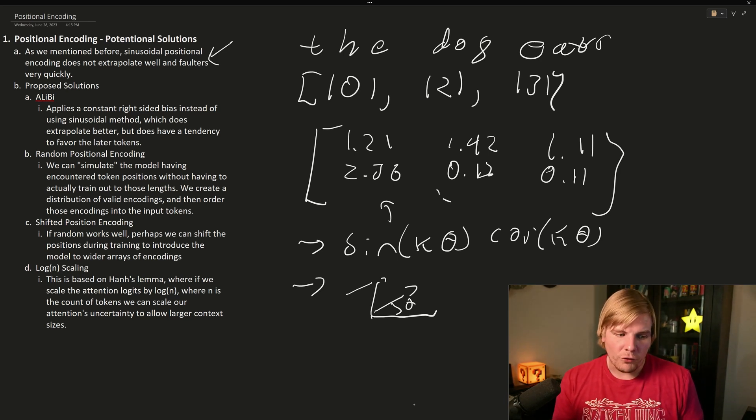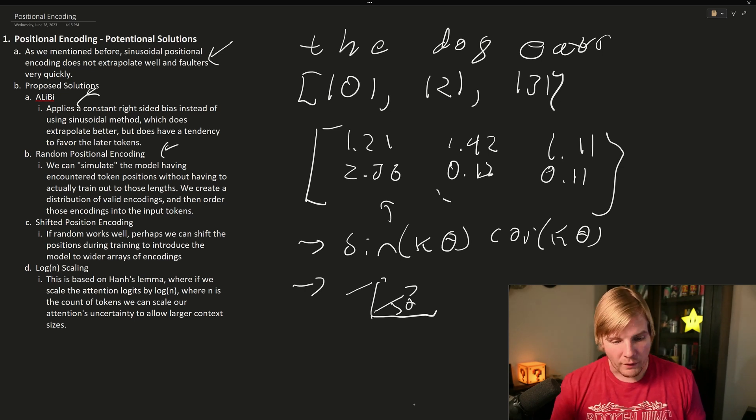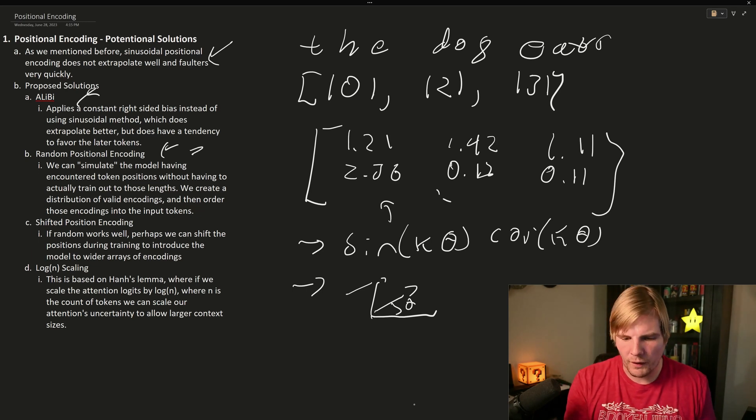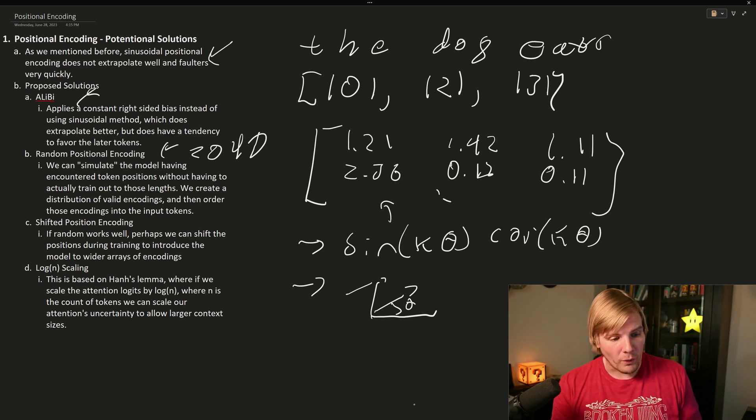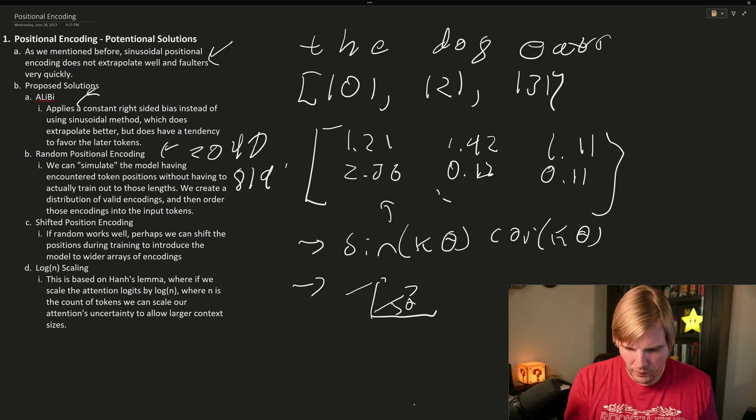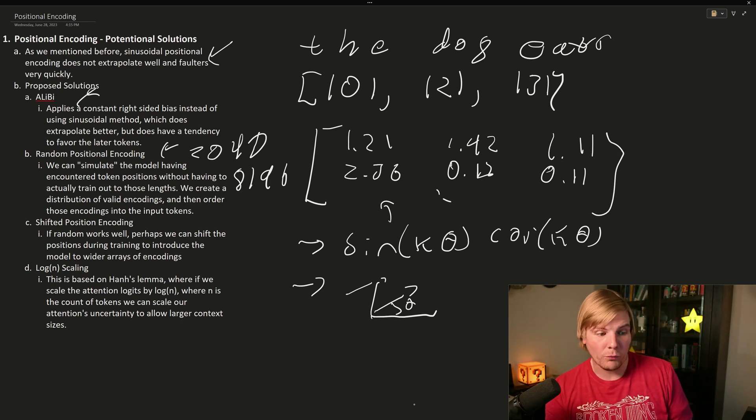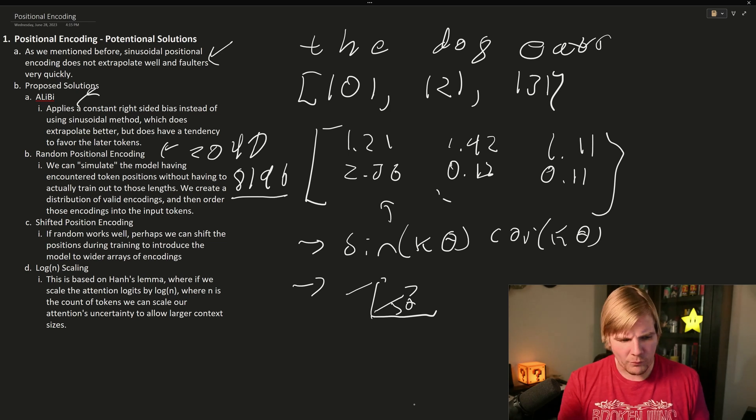But our solutions for this up until now have been alibi, which is the linear bias. But this has a big weakness in that earlier tokens lose some of their context or importance as compared to the later tokens. Then we tried random positional encoding. So what happens if I'm still only going to train 2048 tokens, but I'm going to show it tokens out to 8196. I'm going to show it what the encodings would look like out to 8196, and I'm just going to do it randomly. I'm going to pick random valid encodings for those tokens, sort them, add them back as I would normally positionally encode. And this works pretty well.